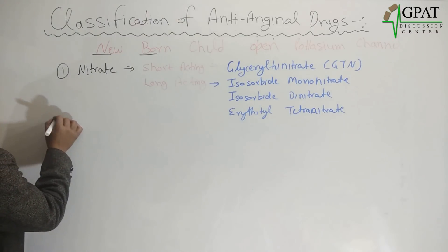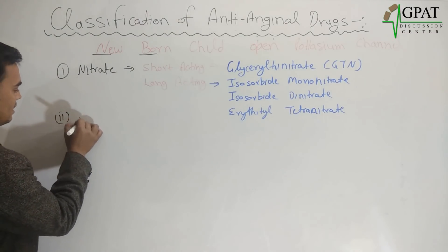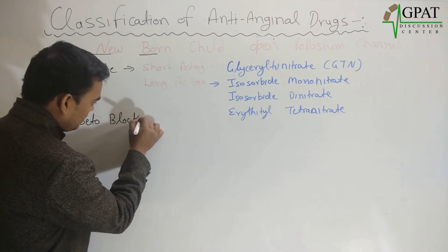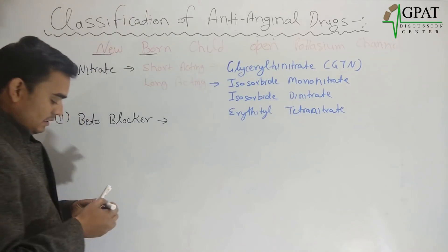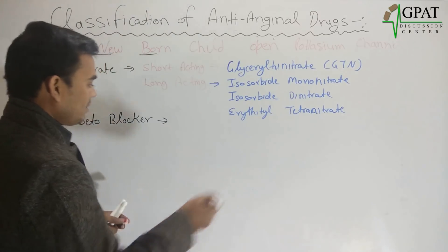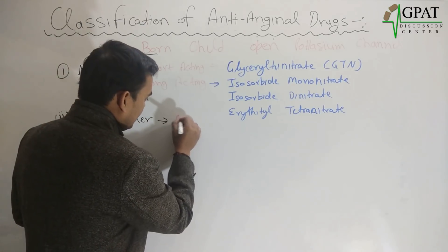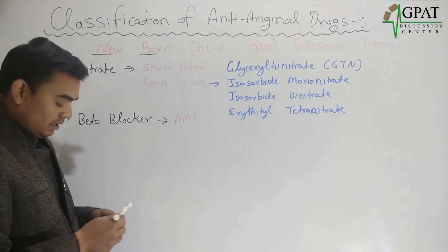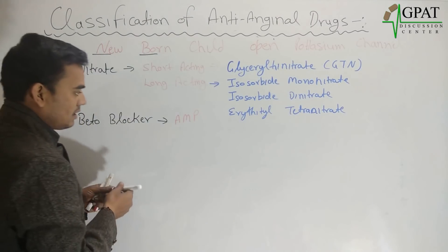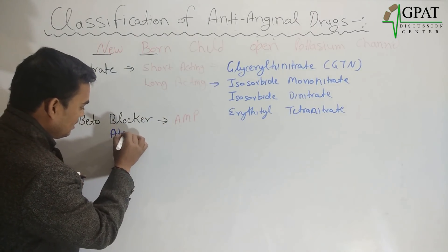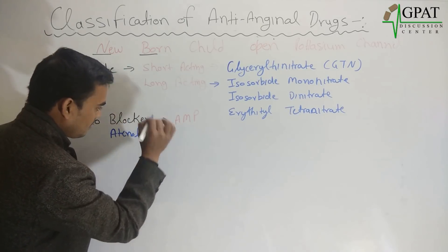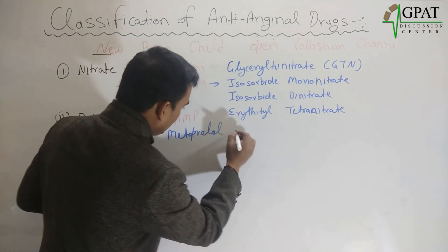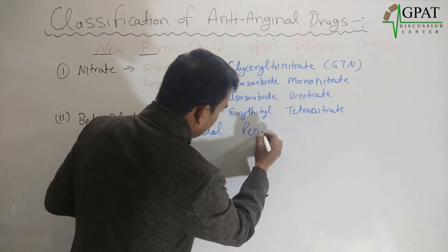The second class is beta blocker. To remember the beta blockers, use the mnemonic A-M-P: atenolol, metoprolol, and pentoprolol.